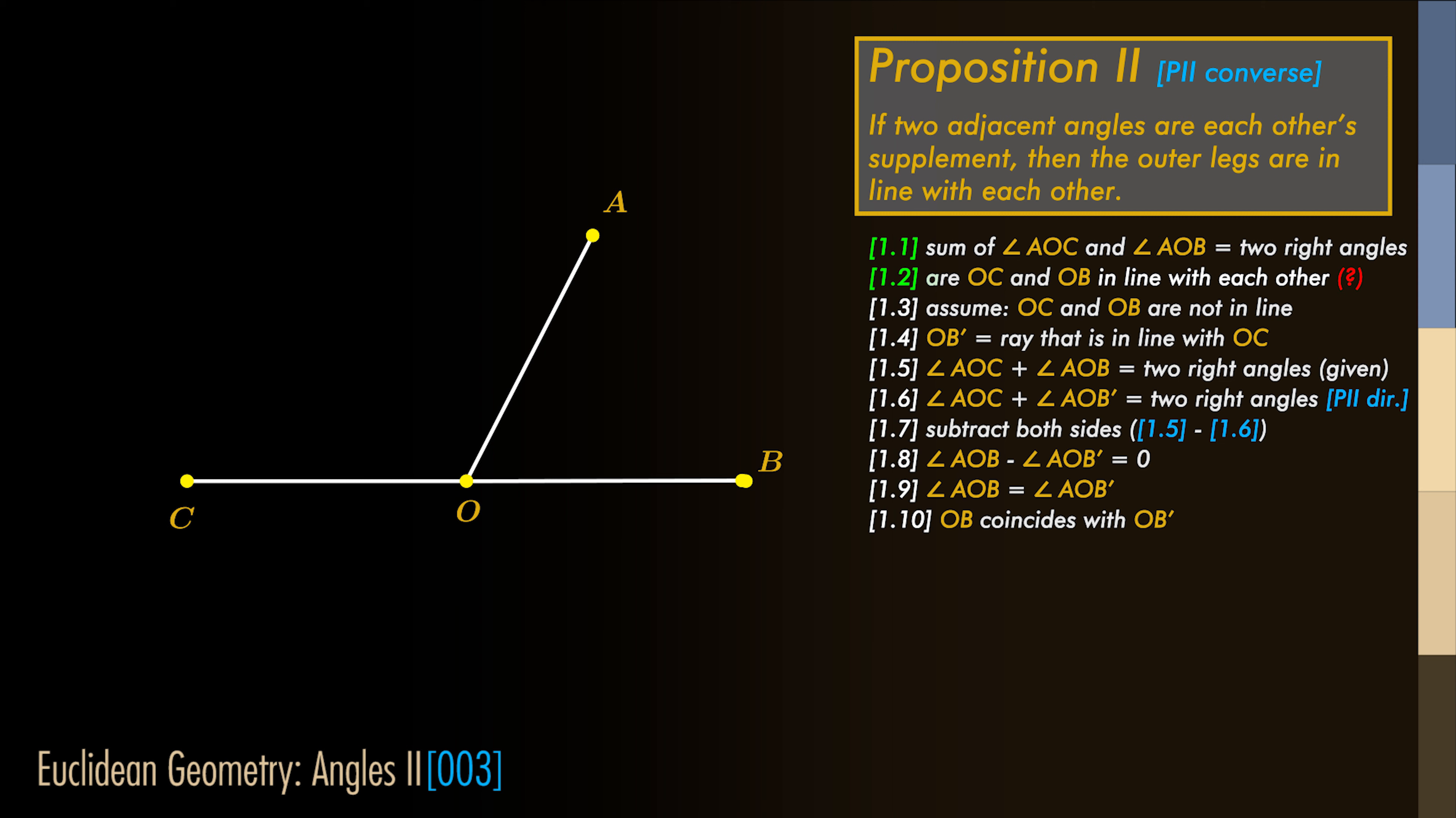Let's use the technique of a proof by contradiction. We assume that OB is not in line with OC and let's call OB' the ray that is in line with OC.